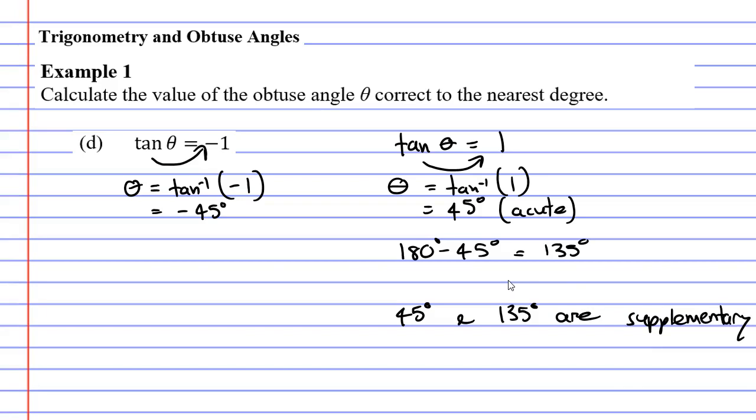Now we learned about this in a previous video. What would happen if I found tan of 135 degrees? What would I get? Well I know that if tan of 45 degrees equals one that tan of 135 will also equal one except it will have a negative out the front.